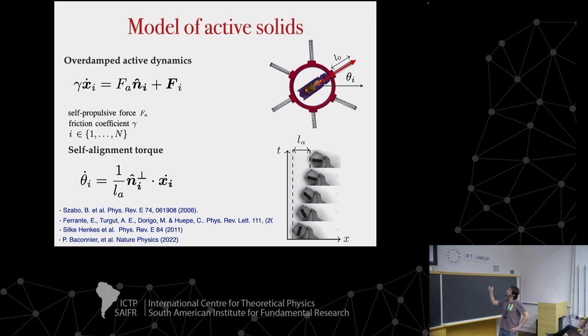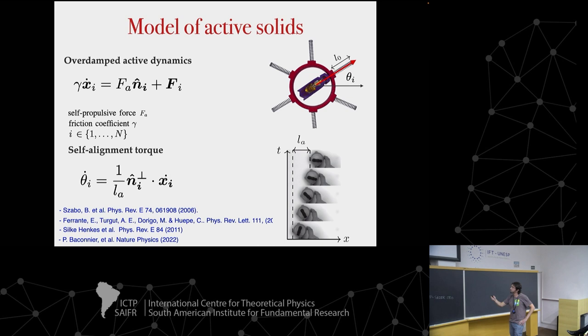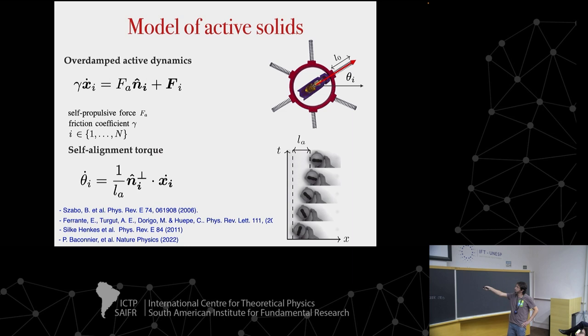The basic model has been presented several times. We have overdamped dynamics: an active force, an elastic force between the different elements, and a self-alignment torque — something that has been measured very well in this kind of system. This means that if an X-pac is pointing in one direction and you move in the opposite direction, it aligns according to the direction of the force or velocity applied. This defines the self-alignment length L_A.